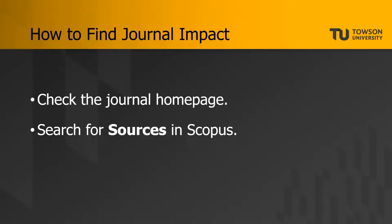But if something isn't listed on the journal's home page, or if you want more information about how a journal ranks in comparison to others in the field, you can use the database Scopus — specifically the Sources tab. Let's hop over to Scopus now and take a look at how this process works.